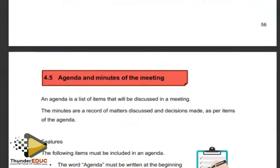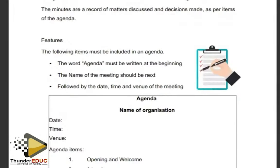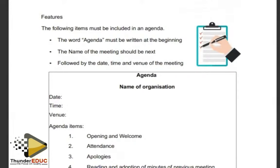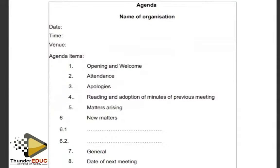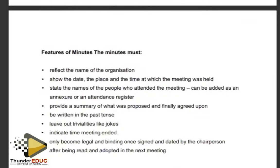We have the agenda and minutes of meetings. An agenda is a list of items that will be discussed in a meeting — it is a proposal for what the meeting will cover. The minutes are a record of matters discussed and decisions made as per items on the agenda. Features of an agenda: the word 'Agenda' must be written at the beginning, followed by the name of the meeting, then the date, time, and venue. Agenda items will be listed — short, concise, and you are done with the agenda. The minutes themselves are more detailed because they are a full record of what was discussed.